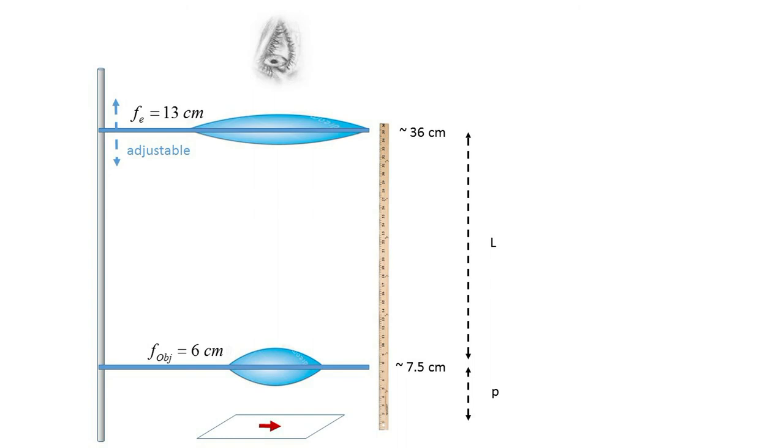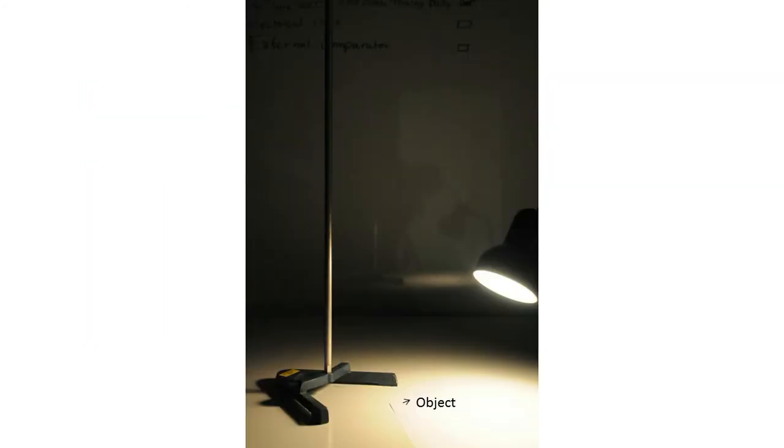The object distance p is simply the height of the objective lens. The length of the microscope barrel, air quotes inserted since there is no actual barrel tube, will be the spacing between the two lenses. Here is how the construction might proceed.